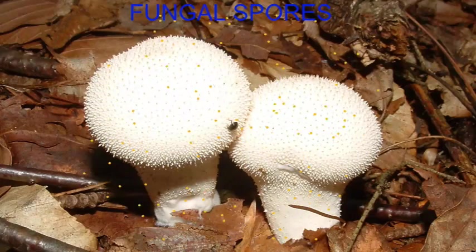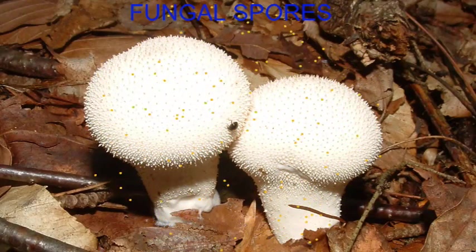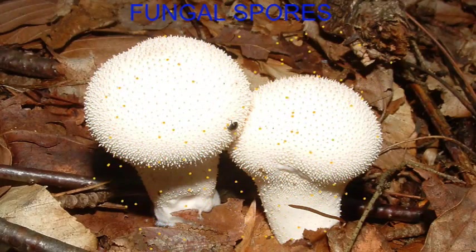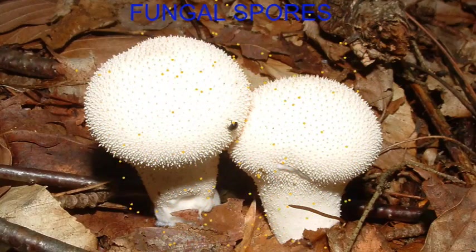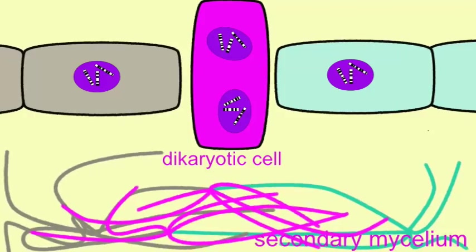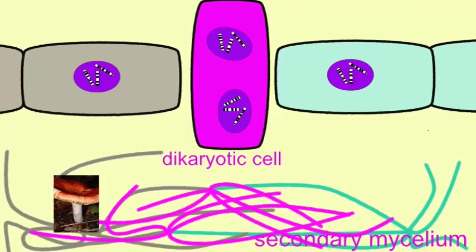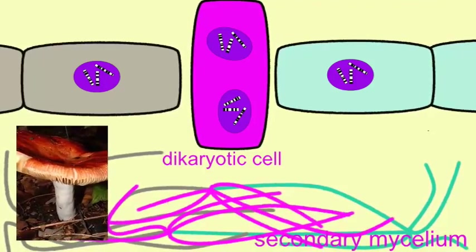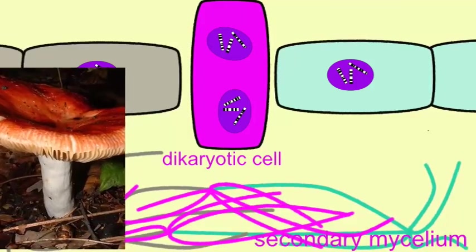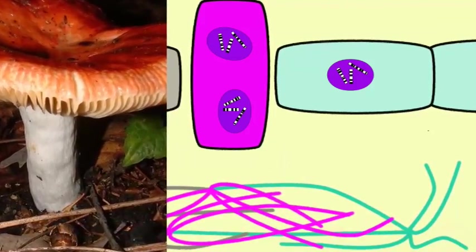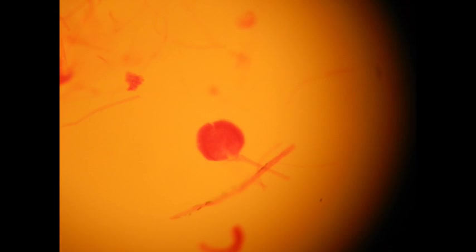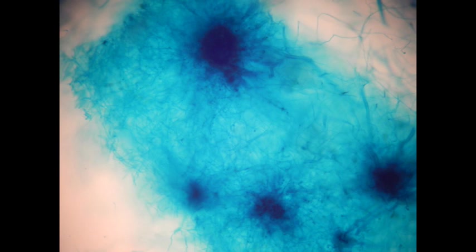Puffball fungi can release a total of 7 trillion spores. An average sized mushroom can release 40 million spores per hour, and so the production of fungal spores is of great interest not only in the propagation of fungi but also in relation to the diseases that they may spread, the ecological roles that they may have, and their contribution to allergy and asthma.